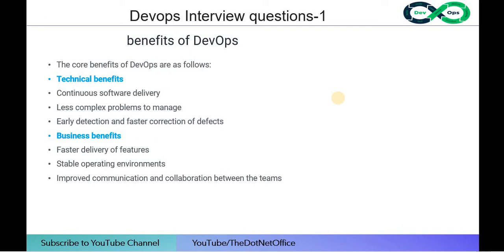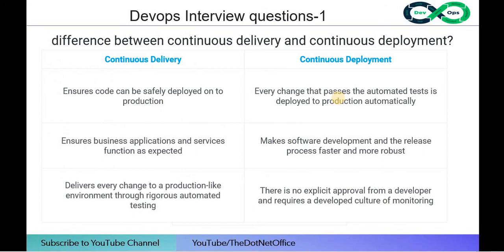The core benefits of DevOps include technical benefits such as continuous software delivery, less complex problems to manage, and early detection and faster correction of defects. Business benefits include faster delivery of features, a stable operating environment, and improved communication and collaboration between teams.